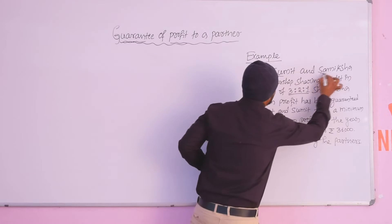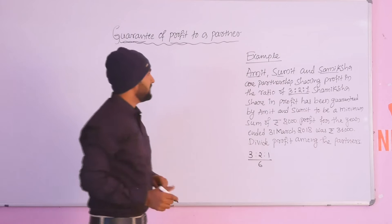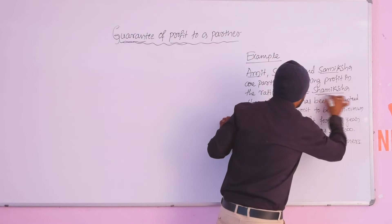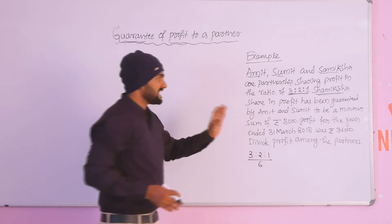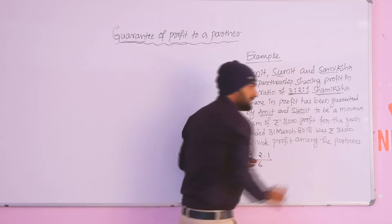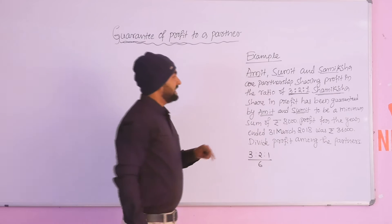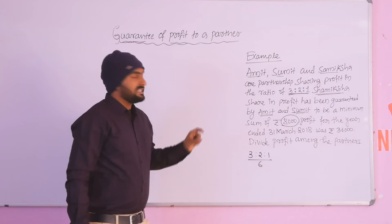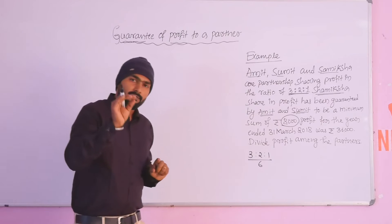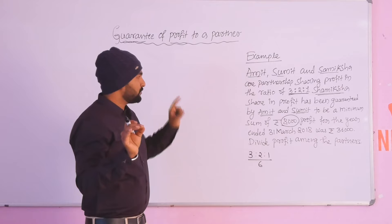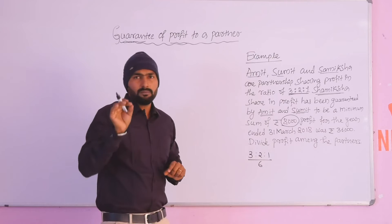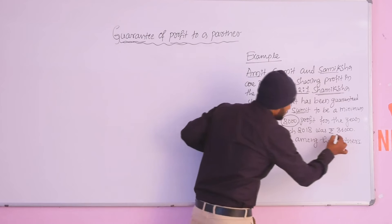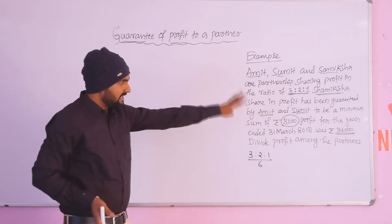Amit, Sumit, and Samiksha are partners sharing profits in the ratio of 3:2:1. Samiksha's share in profit has been guaranteed by Amit and Sumit — a minimum amount of rupees 8,000. So what does this mean? Amit and Sumit together guarantee that Samiksha will receive at least 8,000. The profit for the year ending 31st March 2018 was 36,000.